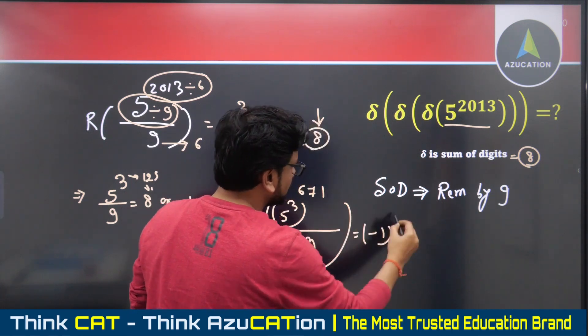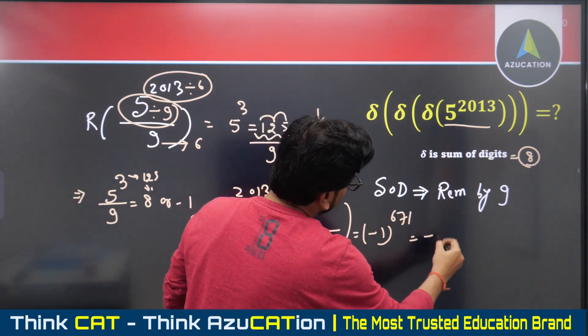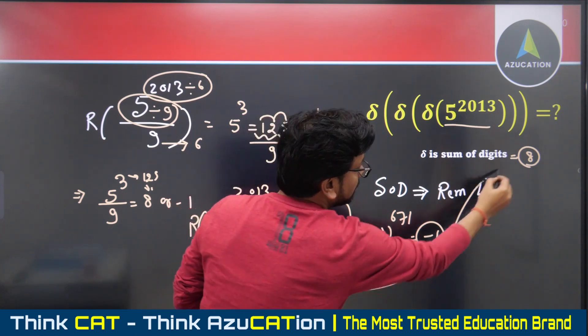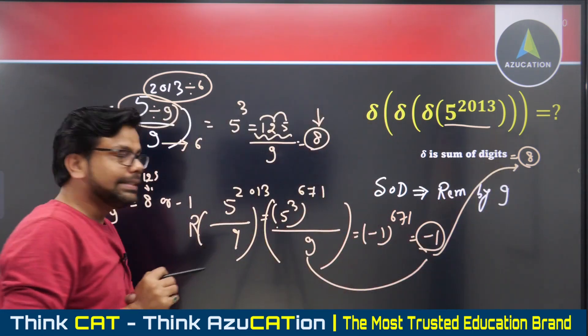This becomes (-1)^671. The remainder is minus one for the case of nine, and minus one means remainder eight. This is the answer.